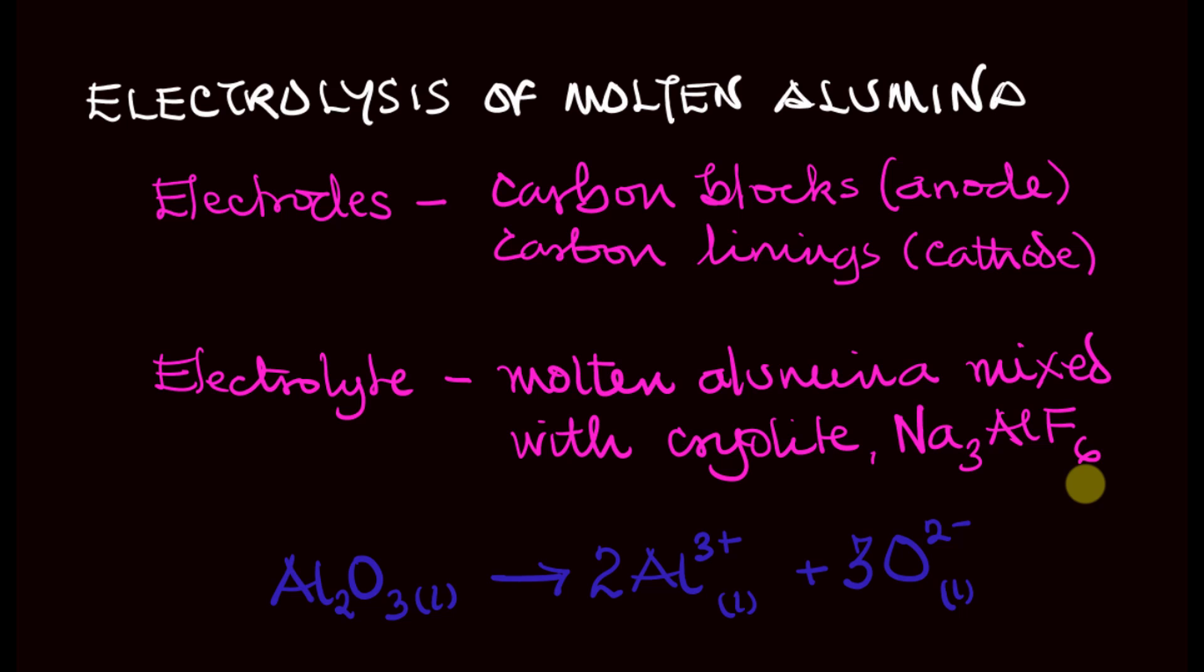Why do you have to add cryolite? The cryolite is added to reduce the melting point of the alumina from about 2000 degrees Celsius to about 900 degrees Celsius. By doing that, it reduces the cost of production via the cost of electrical energy that would be used in melting the alumina. It also helps in making the process economically viable.